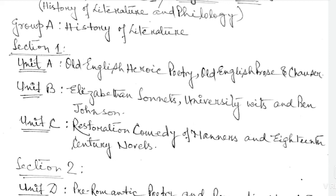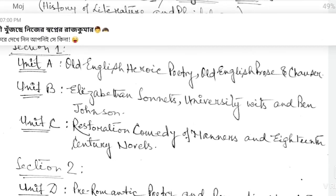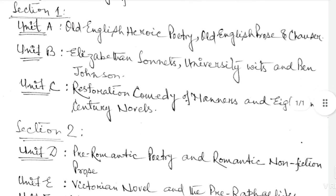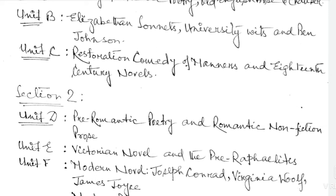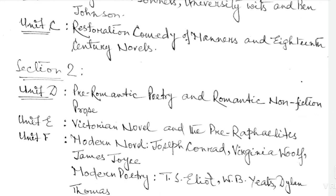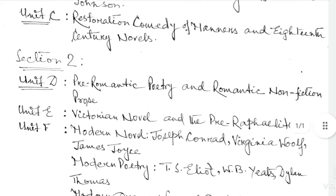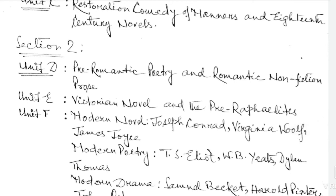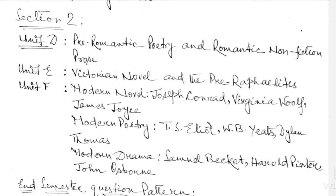Since we are studying History of Literature, Unit A, Unit B, Unit C — the divisions given there are parts of History of Literature that we study. That is Section 1. Then we see Section 2: modern novels. In Section 2, the three novelists are Joseph Conrad, Virginia Woolf, and James Joyce — their novels are studied.